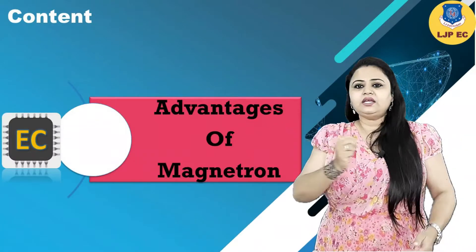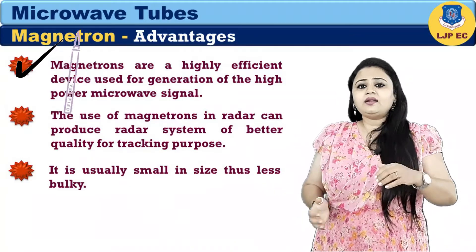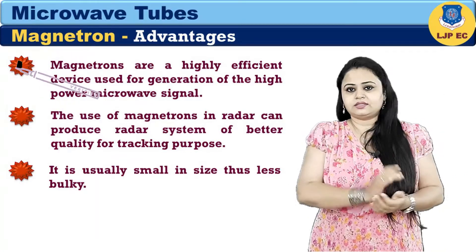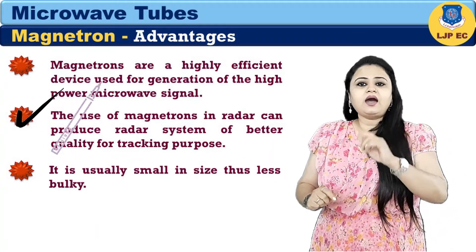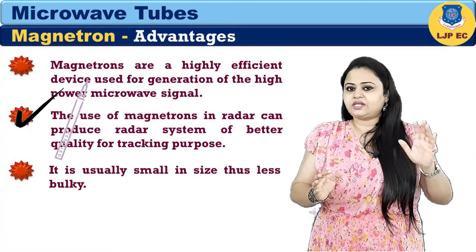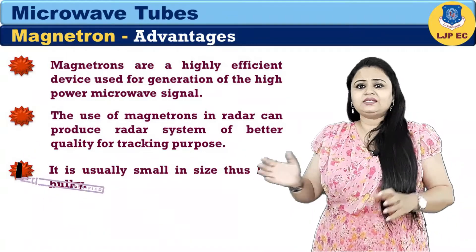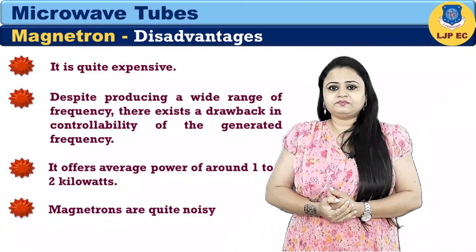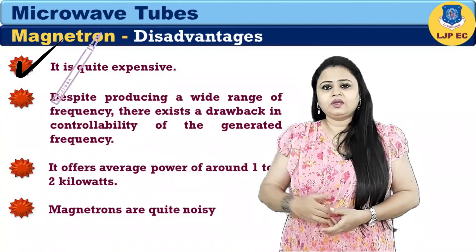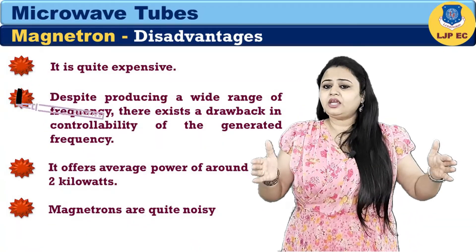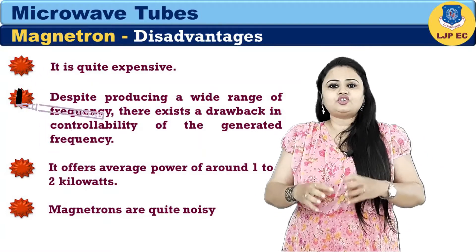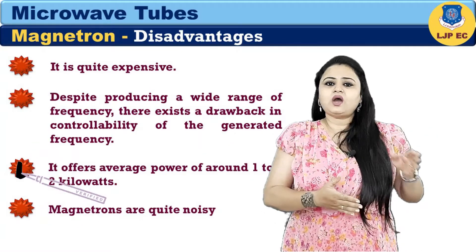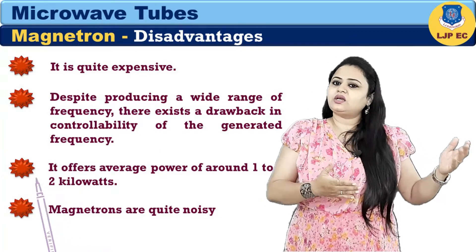Now let us see some of the advantages of magnetron. Magnetrons are highly efficient devices used for generation of high power microwave signals. The use of magnetron in radar can produce a radar system of better quality for tracking purposes. It is usually small in size, thus less bulky. Disadvantages include: it is quite expensive; despite producing a wide range of frequencies, there is a drawback in controllability of the generated frequency; it offers average power of around 1 to 2 kilowatts; and magnetrons are quite noisy.